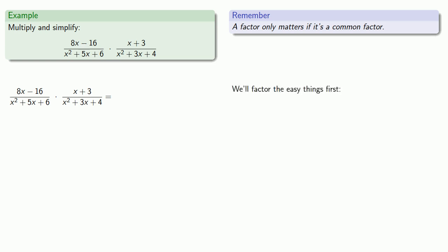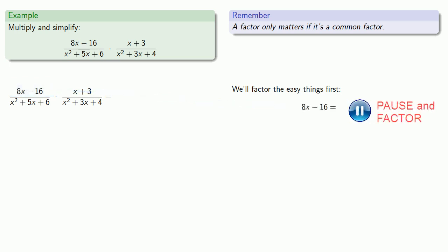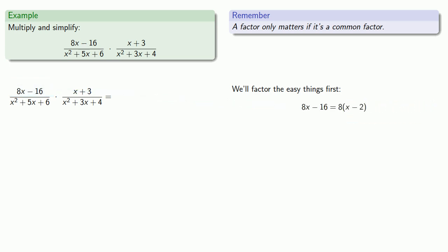We'll factor the easy things first. This 8x minus 16 looks easier to factor. Since equals means replaceable, instead of 8x minus 16, we'll write 8 times x minus 2.